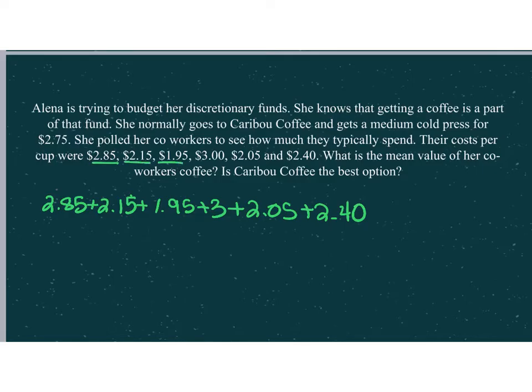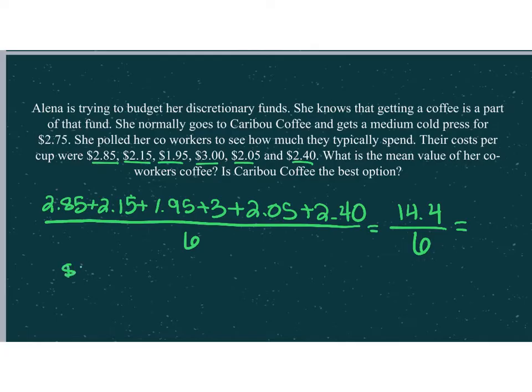What I want to do first is add all of those prices up. So $2.85 plus $2.15 plus $1.95 plus $3 plus $2.05 plus $2.40. There's six different coworkers she pulled, so I'm going to add all of those up and divide it by six. When I take that top and add all those together, I get $14.40, and then I'm going to divide by six. When I do that, I get $2.40. We noticed that she spent $2.75. Is that the best option? No. So Caribou is not the best option because it's more expensive than the average of her coworkers.